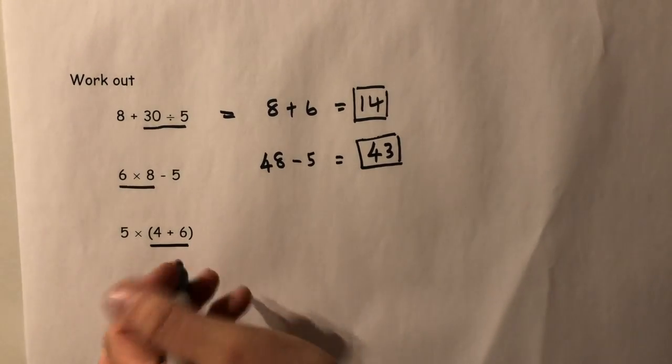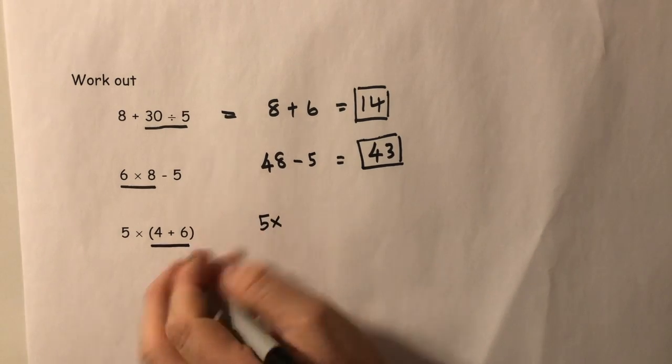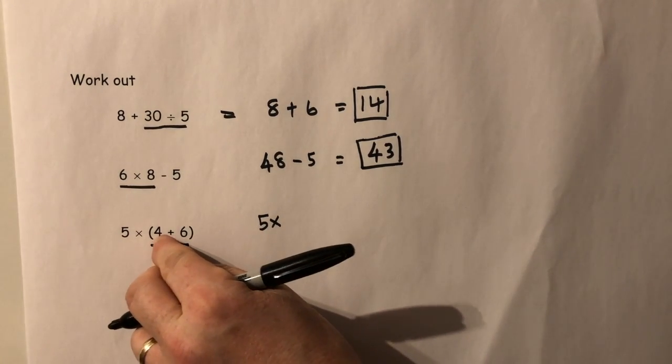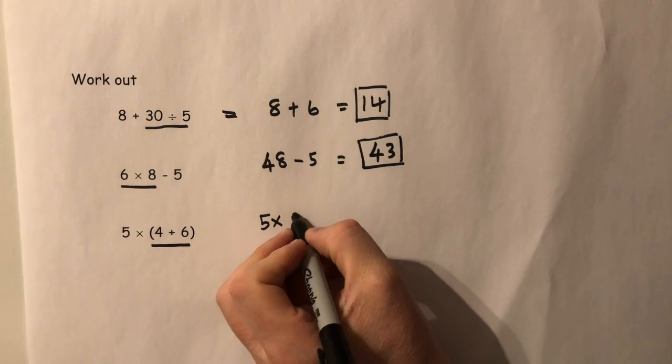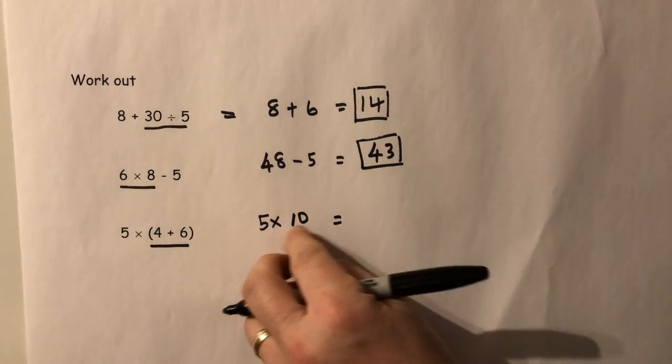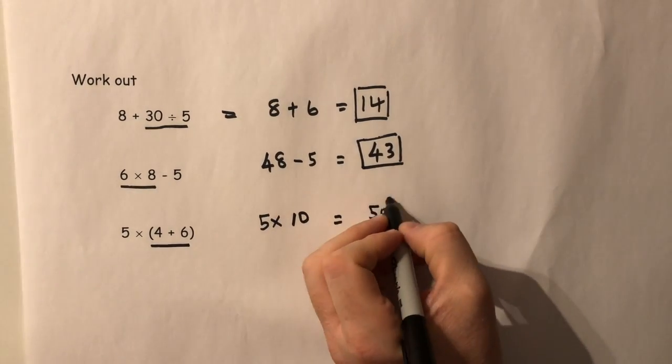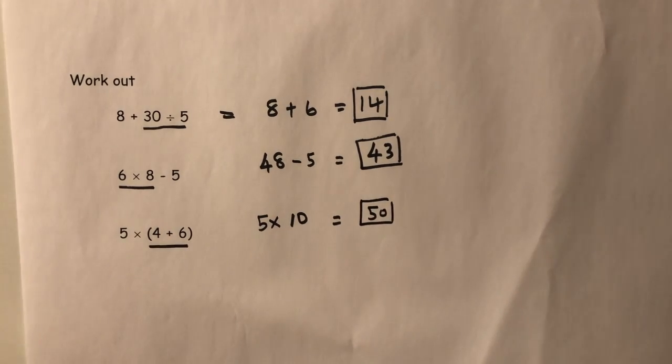In the case of the third one, we need to do the bracket first. So we have 5 times, and the bracket is 4 plus 6 which is 10, and 5 times 10 is 50. Answer.